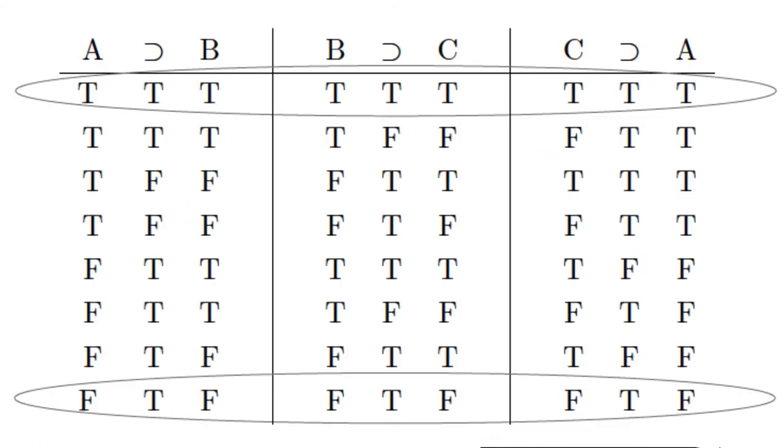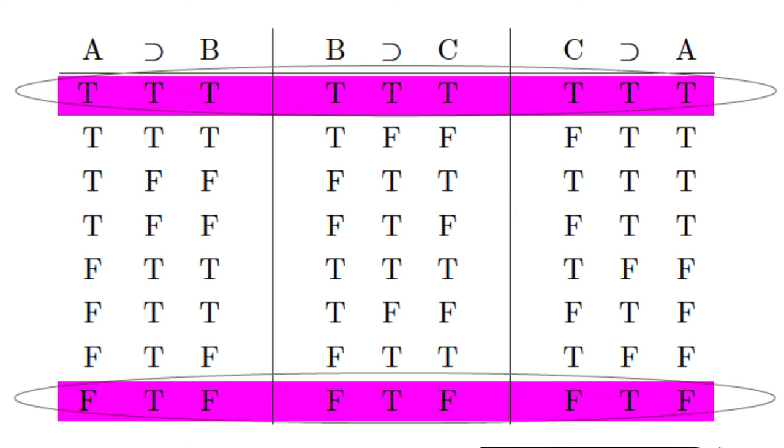Here's our truth table, again omitting the reference column, which is unnecessary since we can simply input our initial truth values beneath the atomic sentences. As you can see, both the top and bottom rows show that the three conditional sentences can be true in the same row. Since we only need one row to demonstrate this, this set of sentences is logically consistent.